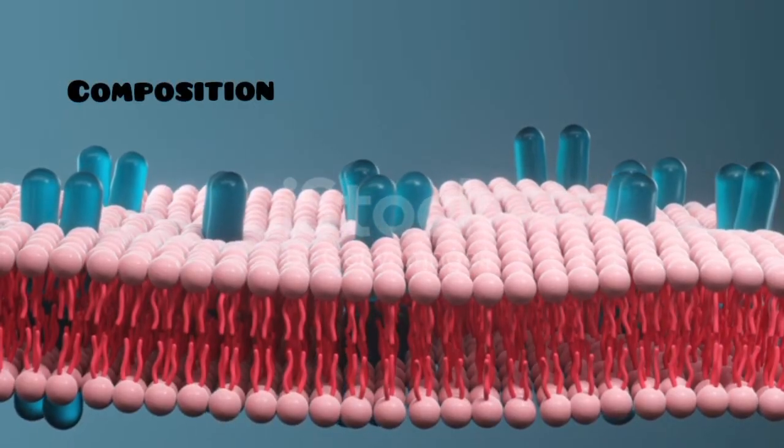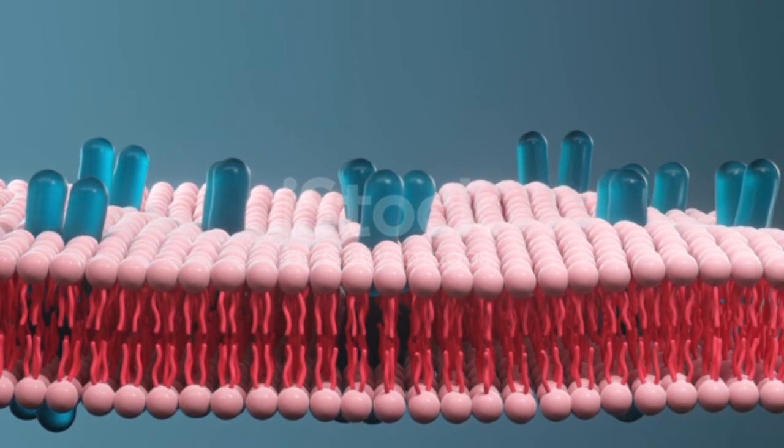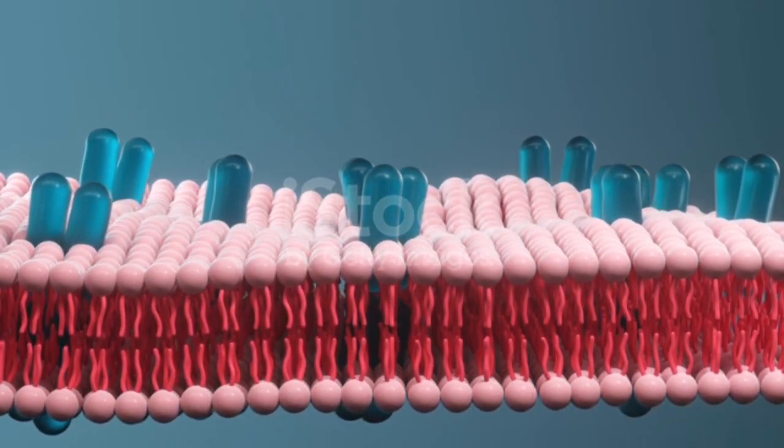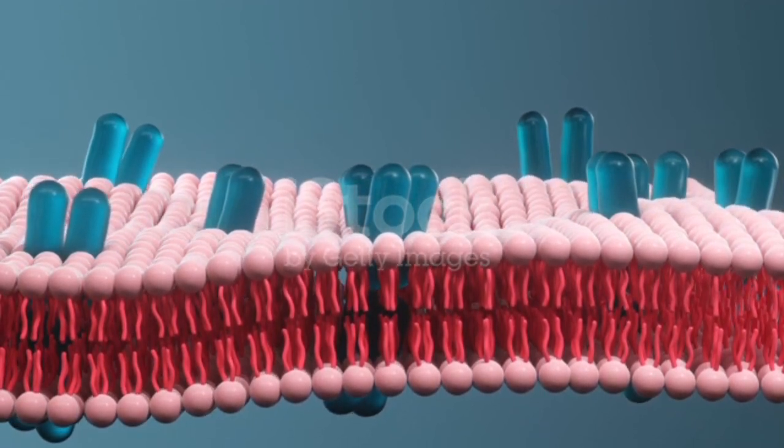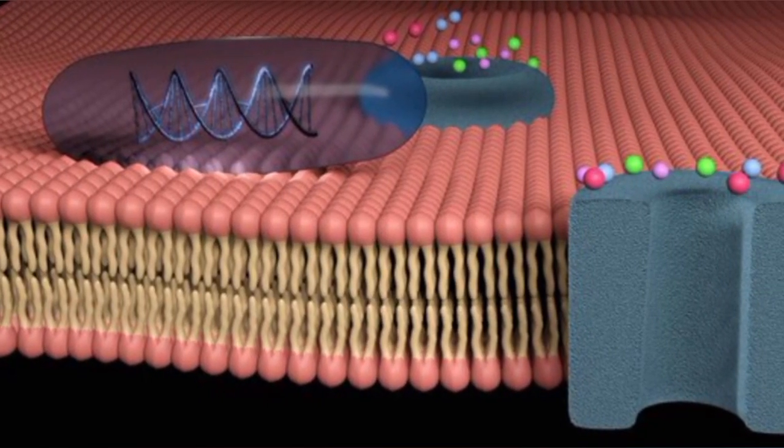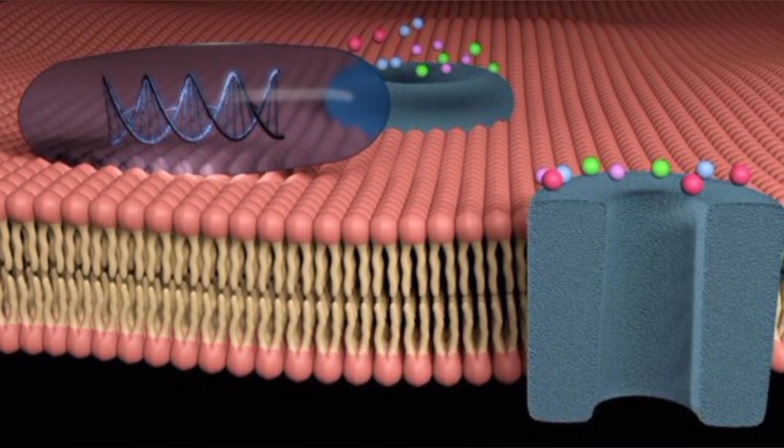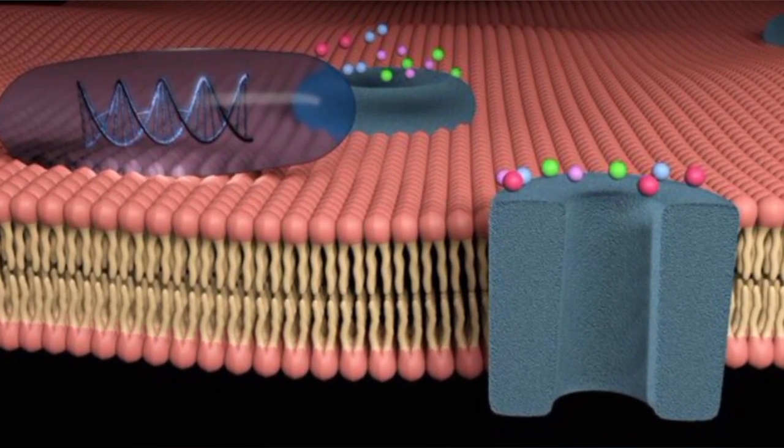Composition: It primarily consists of a phospholipid bilayer with proteins interspersed within or attached to it. The phospholipid bilayer forms a barrier that is selectively permeable, allowing certain substances to enter or leave the cell while restricting others.